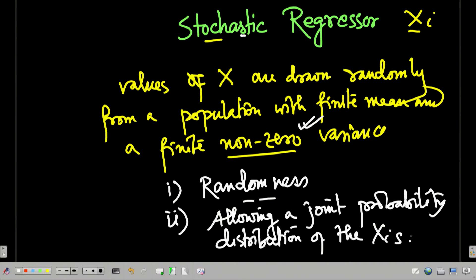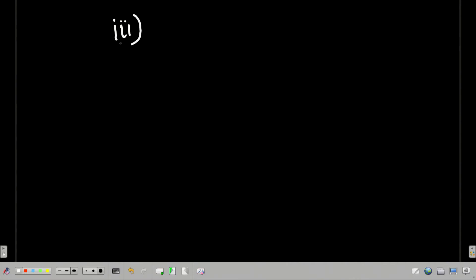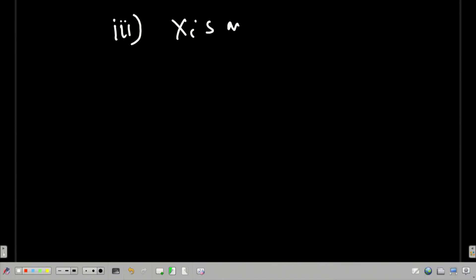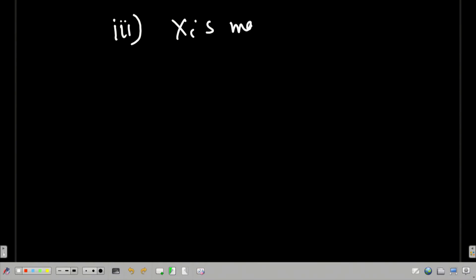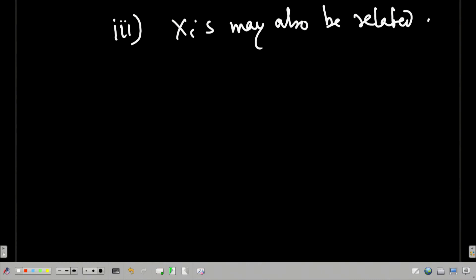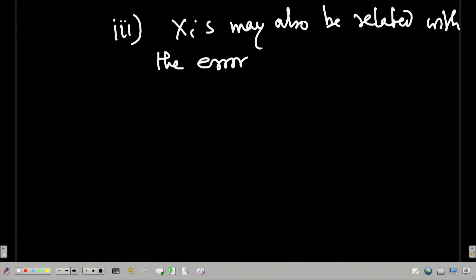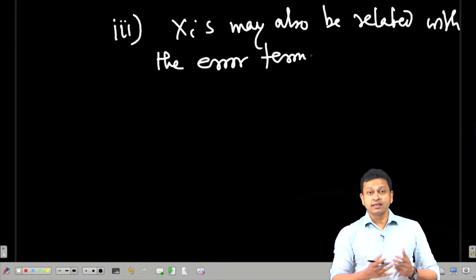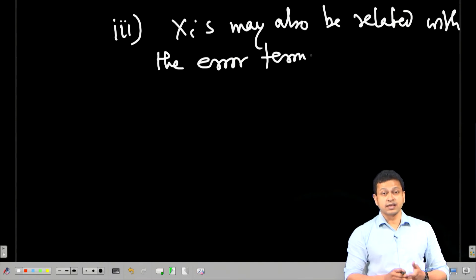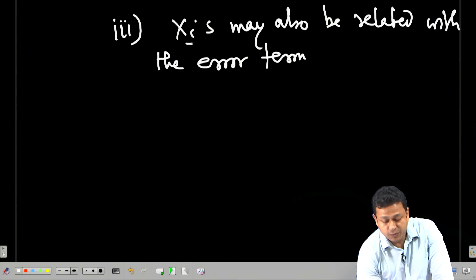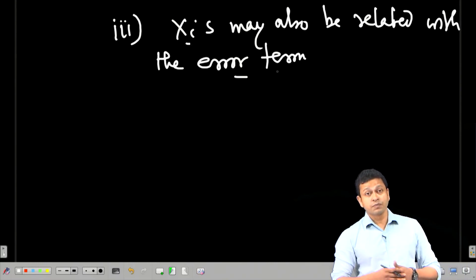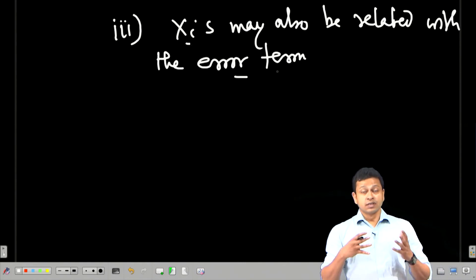That is a real relaxation, but at what cost? The moment I actually relax this, you can no longer ignore the possibility that the xis may also be related with the error term, and that is a problem. In the previous case, when we talked about the unbiasedness of the regression estimator, we were assuming that xis are required to be independent of the error term. But the moment I allow joint probability distributions among the xi variables, I also create the possibility that xis may be related to the error term.